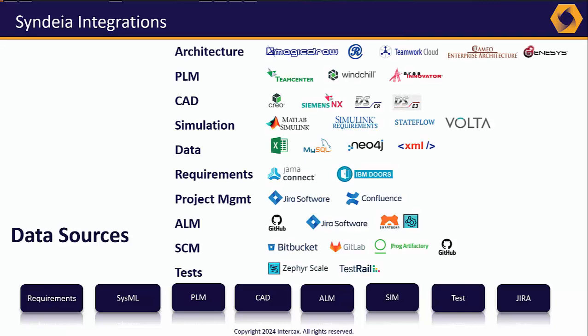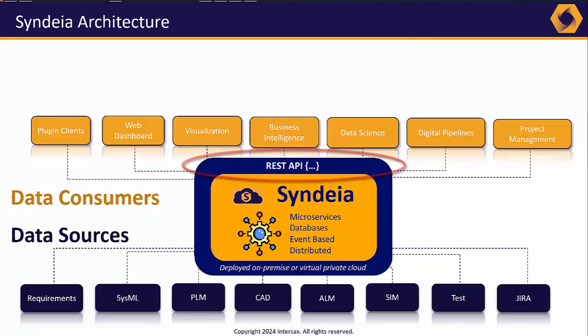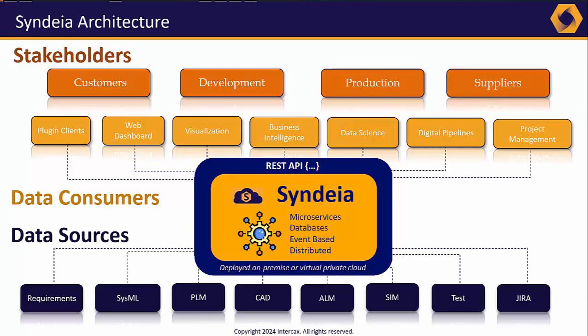Cyndia supports a wide and ever-increasing set of software tools and sits on top of these, resident on your server or private cloud, creating and maintaining a graph of connections between them you can use to share, search, and analyze this data. All of these capabilities are available through an open, fully documented REST API to user interfaces that we provide or that you create, with best-in-class data science and business analytics platforms, supporting all the stakeholders in your program. There are hundreds of different use cases supported, but let's look at a few examples of Cyndia in action.